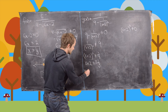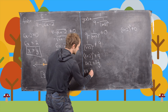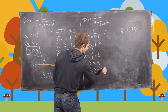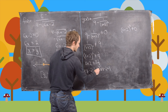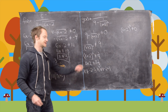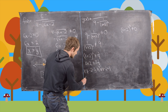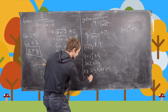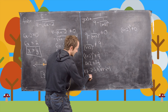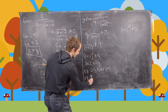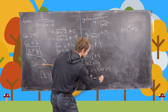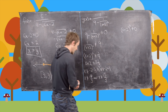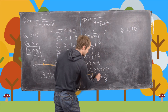Subtracting 2 from both sides gives us x is not equal to negative 2 minus 1 over 3, and x is not equal to negative 2 plus 1 over 3. Converting to common denominators: negative 2 minus 1 over 3 is negative 7 over 3, and negative 2 plus 1 over 3 is negative 5 over 3. So we have two excluded values from this first condition.